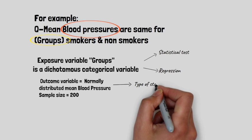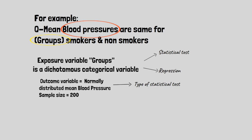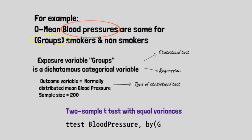Then, in this particular situation, two sample t-test can be used to compare the mean of blood pressure of smokers versus non-smokers. The Stata command will be t-test blood pressure by groups.